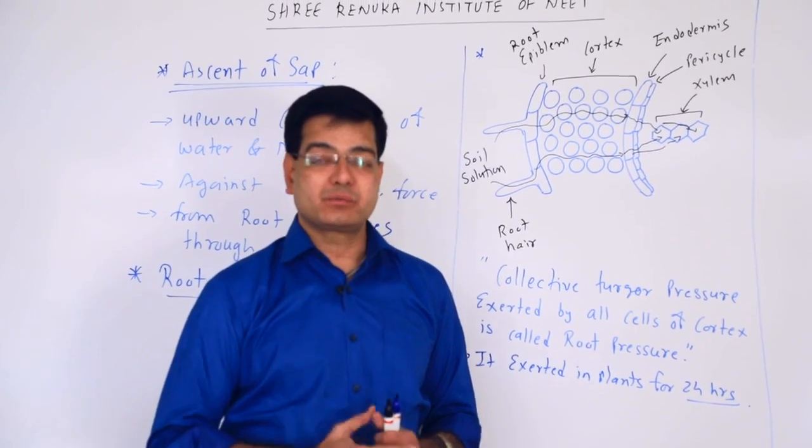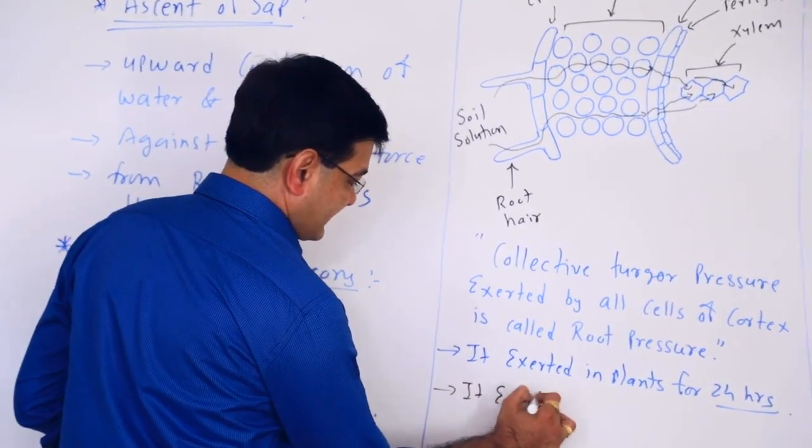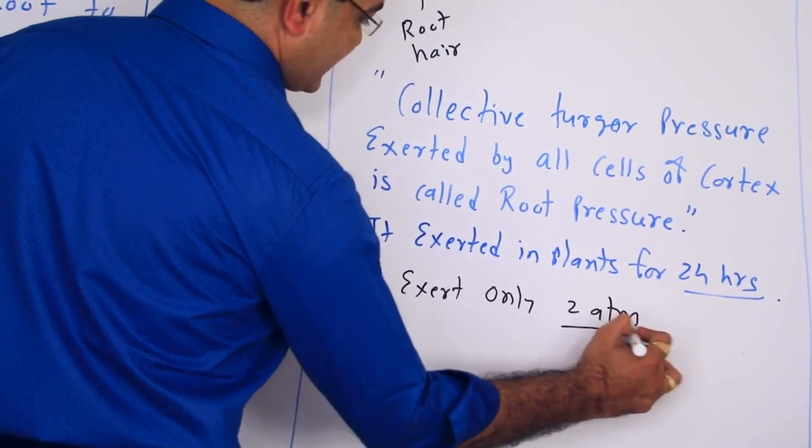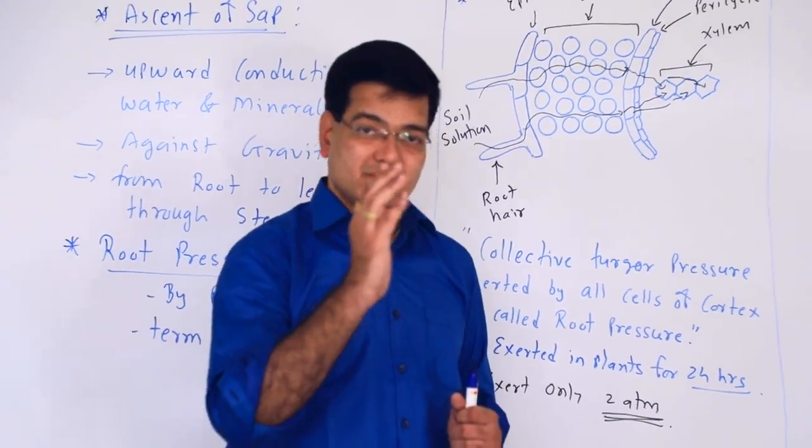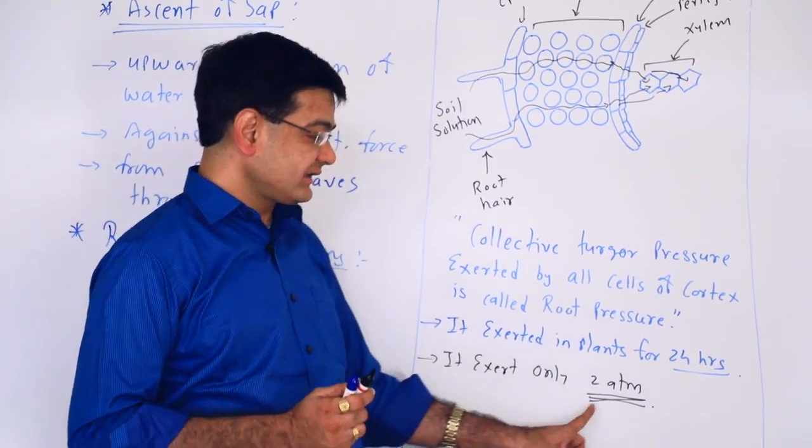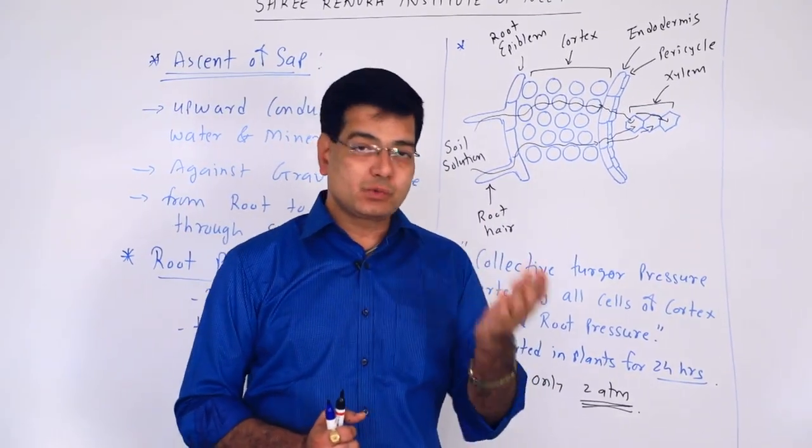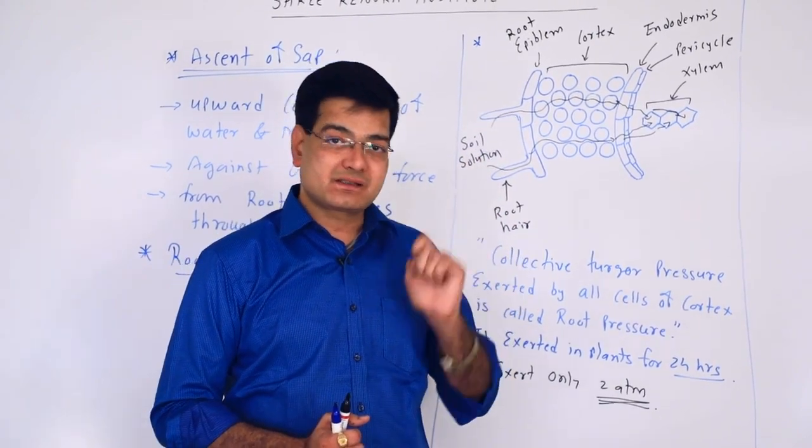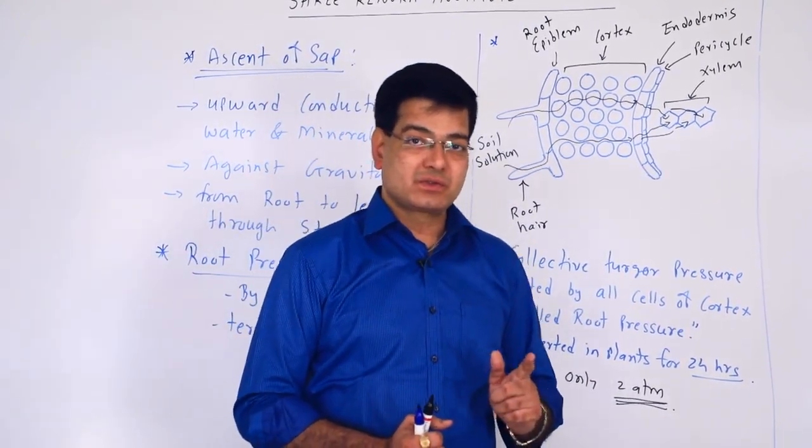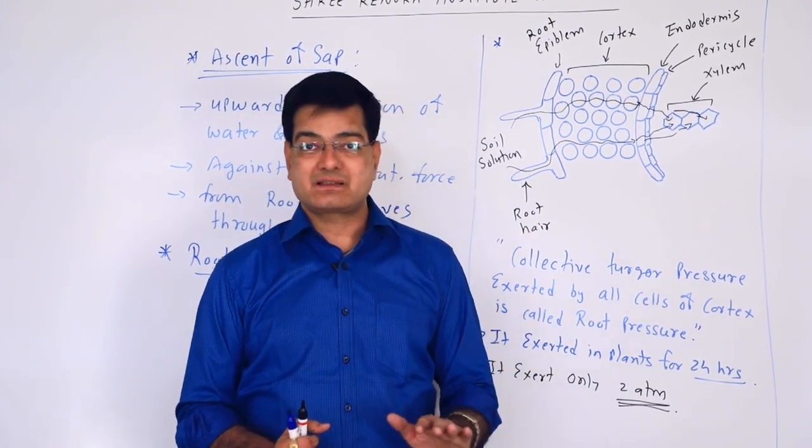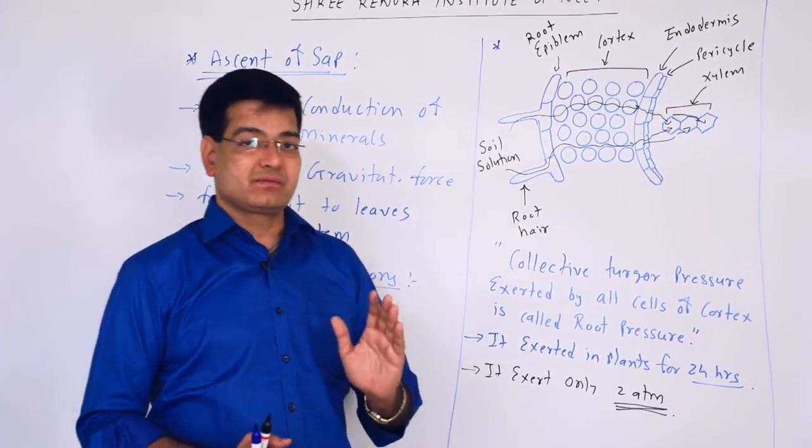The drawback of root pressure theory is that it exerts only 2 atmospheric pressure in the plant. In some cases, occasionally 5 to 10 atmospheric pressure was observed, but normally it is nearly 2 atmospheric pressure. This 2 atmospheric pressure is not adequate to raise water in tall trees. In tall trees, nearly 50 atmospheric pressure is required, which is the minimum amount. So 2 atmospheric pressure is much less than required. That is why in tall trees, root pressure is not enough for ascent of sap.